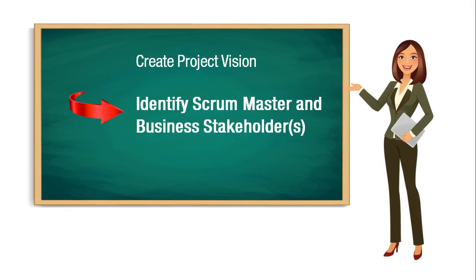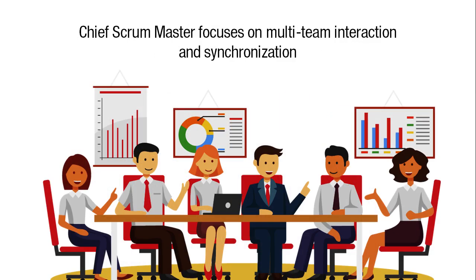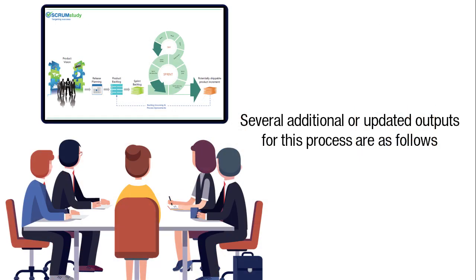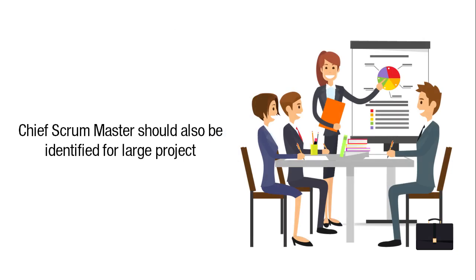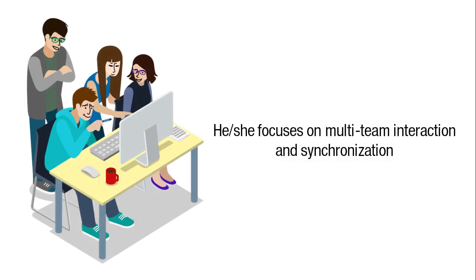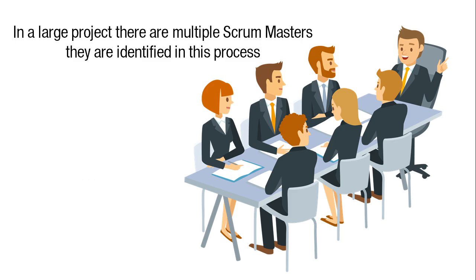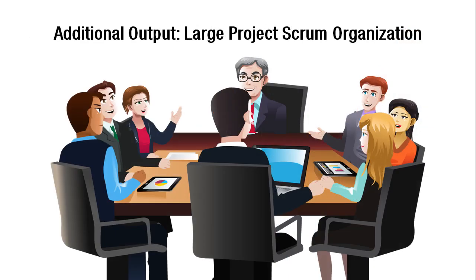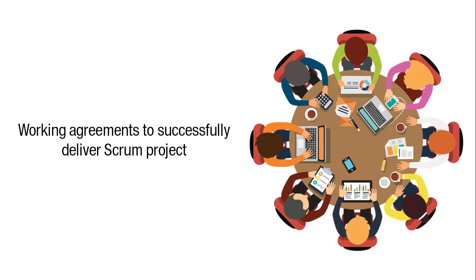Identify Scrum Masters and Business Stakeholders is the next process. A chief Scrum master and additional Scrum masters are identified in this process. The chief Scrum master focuses on multi-team interaction and synchronization. Additional outputs for this process include: identified chief Scrum master — similar to the chief product owner, the chief Scrum master should also be identified for a large project, focusing on multi-team interaction and synchronization — and updated identified Scrum masters, since in a large project there are multiple Scrum masters. An additional output is the large project Scrum organization, as it will be essential for the entire large project team to embrace a common understanding of Scrum and working agreements to successfully deliver the Scrum project.